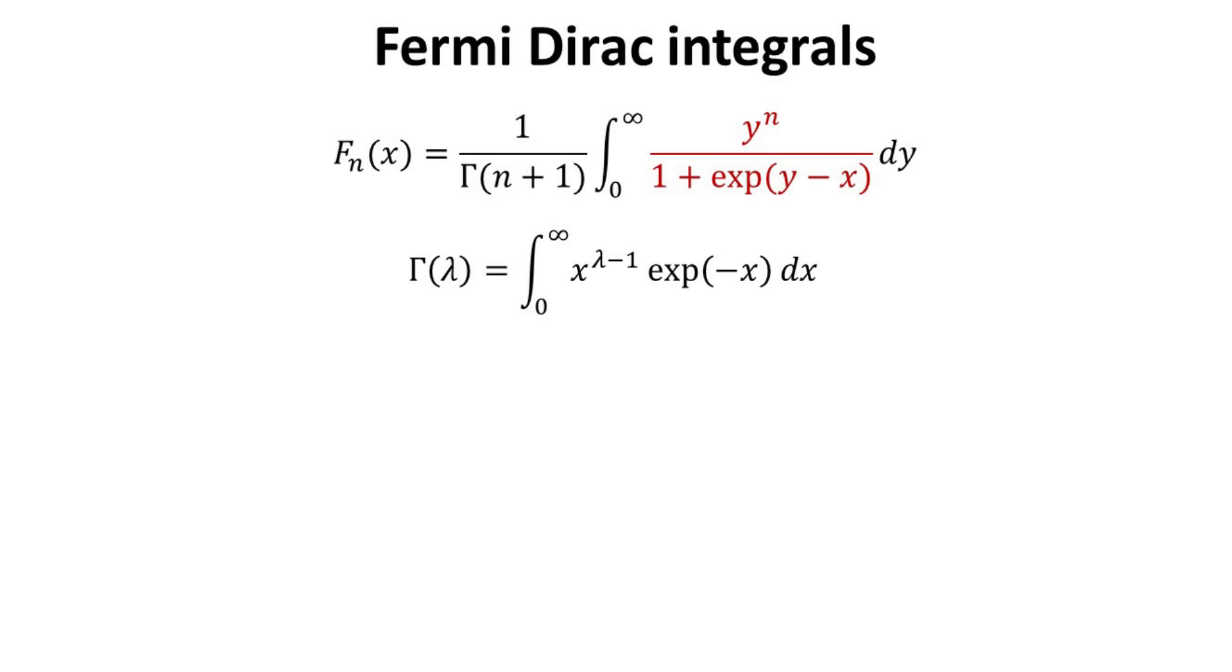The Fermi-Dirac integrals, herein denoted by Fn, are often encountered in semiconductor physics and devices. We see that when n is zero, the integrant is just the Fermi-Dirac function. This is the mathematical gamma function, whose values are well known, and can be obtained with scientific calculator.